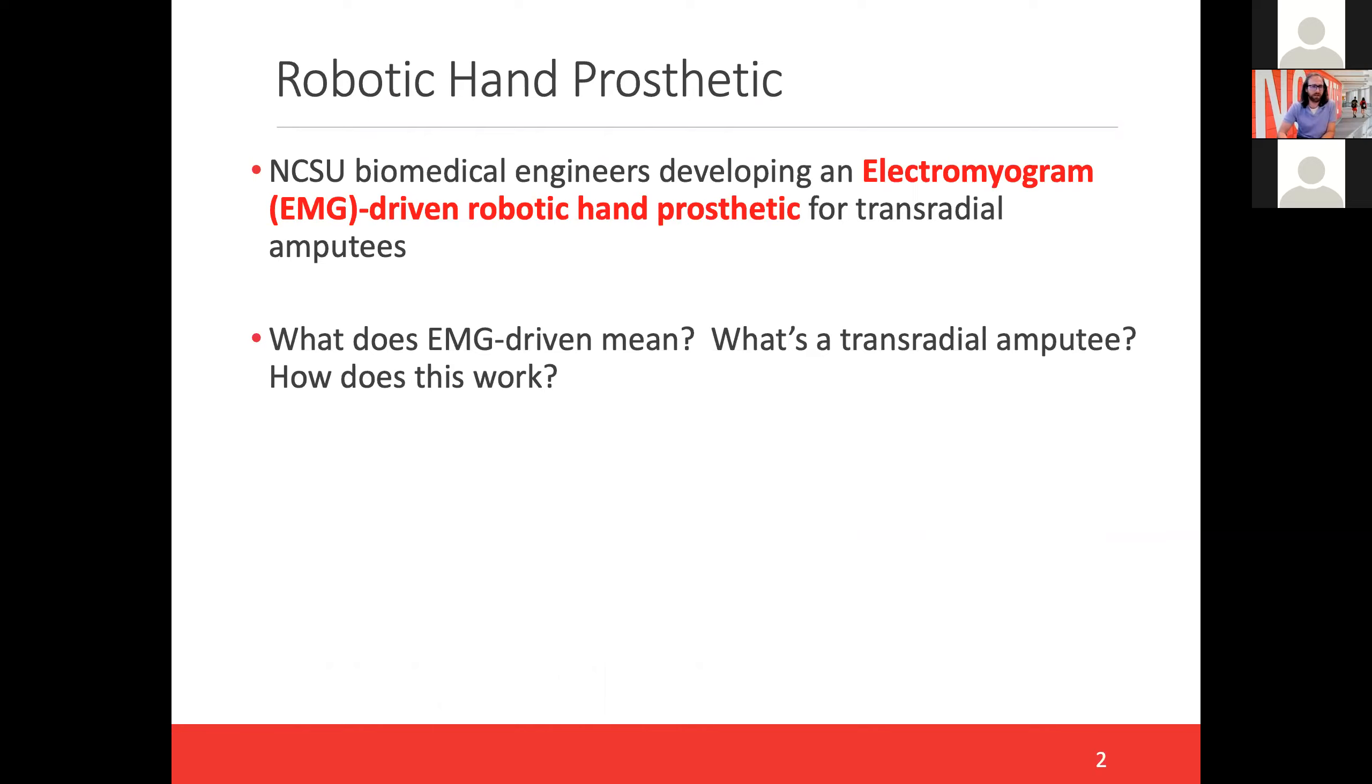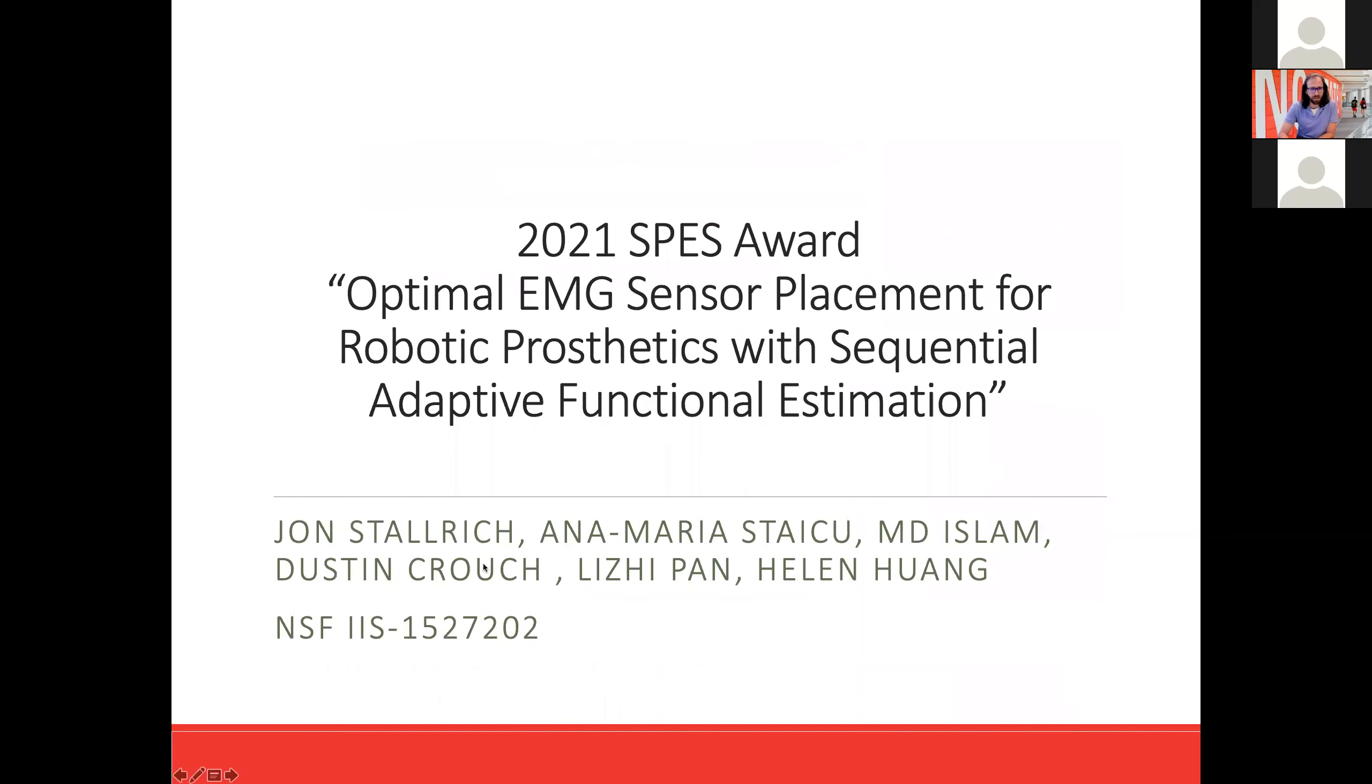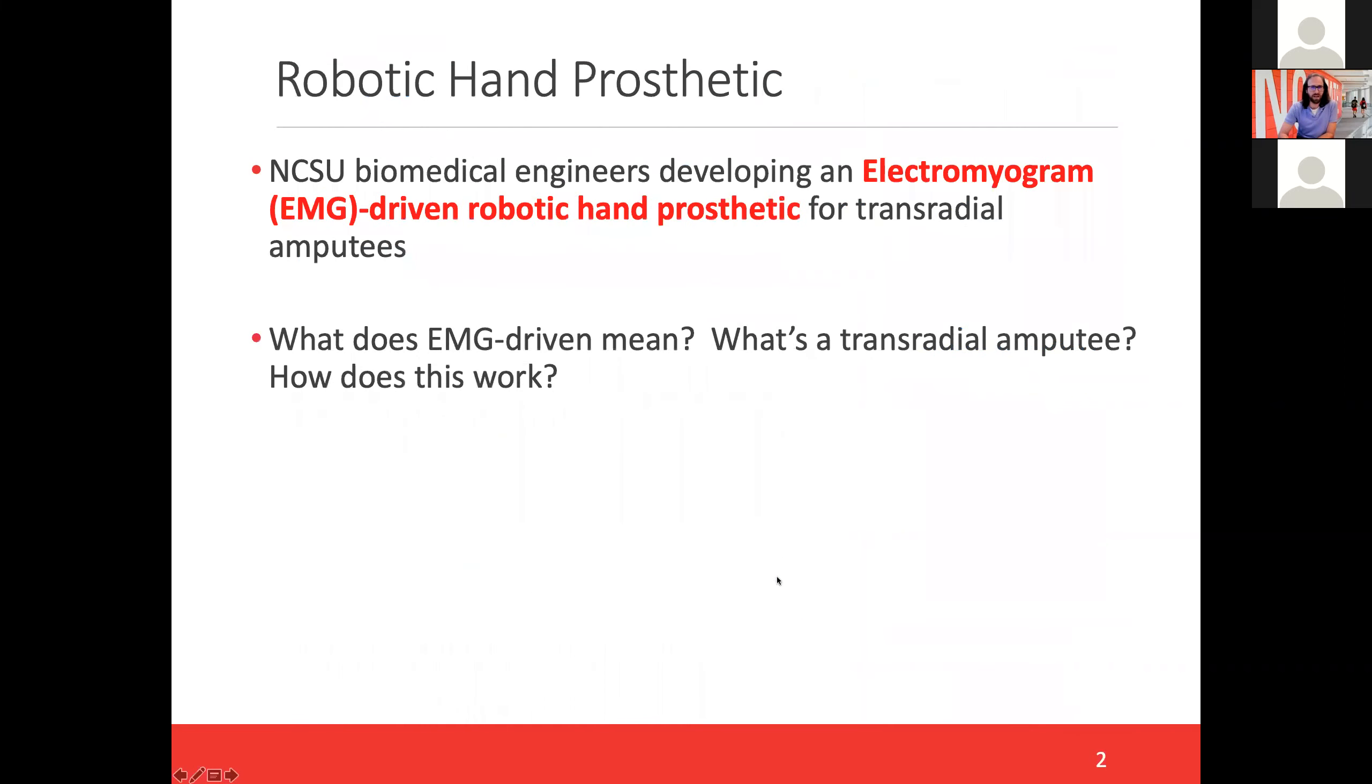This award is very collaborative in nature. So I wanted to spend a lot of time at the beginning of this talk describing the collaborative discussions and process that led to the contribution. The NC State biomedical engineers involved in this project, Dustin Crouch, Lizzie Pan, and Helen Huang, came to me my first year at NC State and asked me about developing EMG-driven robotic hand prosthetics for transradial amputees. I said that sounds great. What does all this mean? What does it mean to be EMG-driven? What does it mean to be a transradial amputee? And how does this even work?